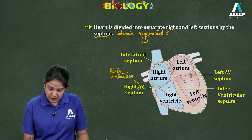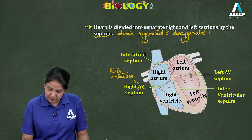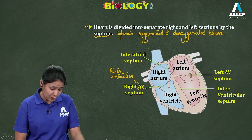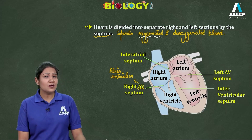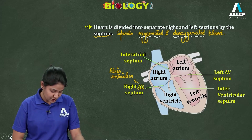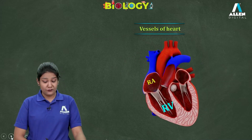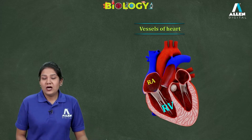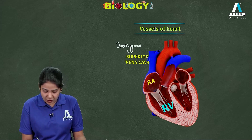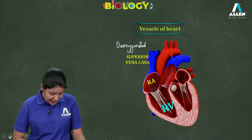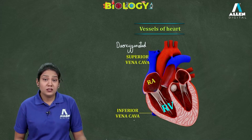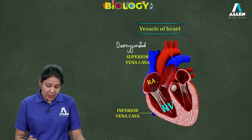Because of the presence of the septum, oxygenated and deoxygenated blood are well separated. Deoxygenated blood is the blood which is rich in carbon dioxide. Now moving on, let's discuss the vessels of the heart — specifically, from where the chambers receive the blood.